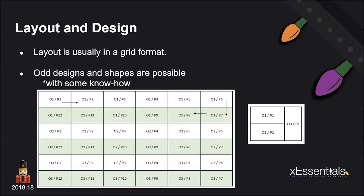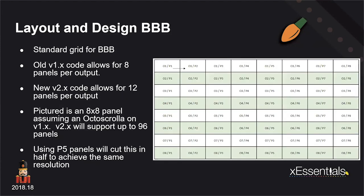For layout and design, the layout is typically done in a grid format. You can also do odd shapes and configurations — for example, two panels standing sideways in landscape and one in portrait mode. Anytime you do something like that, you've got to know how to configure it, and you may have to do some special programming inside of XLights or whatever you're using to program it.